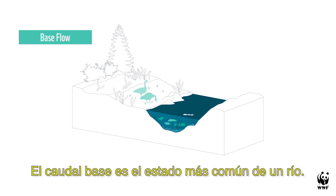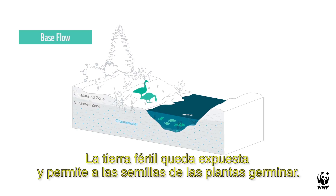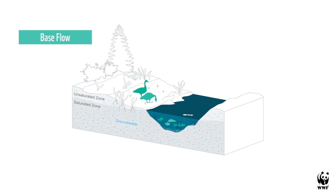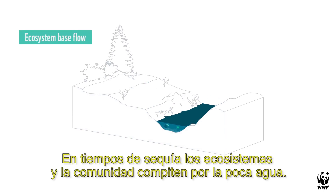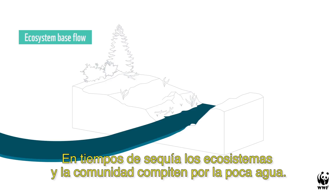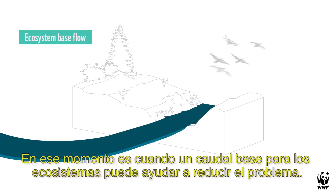The base flow is the most common state of a river. Fertile land is exposed, allowing plants to flourish. In times of very low flow, the ecosystem and community compete for very little water. That is when an ecosystem-based flow can be used to help reduce the conflict.